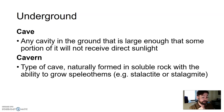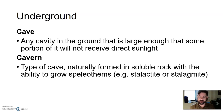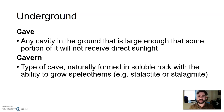A cavern is a type of cave naturally formed in soluble rock. Soluble rock is rock that is dissolvable. So a cavern is a type of cave formed in soluble rock with the ability to grow speleothems — a fancy term for stalactites or stalagmites. If you've ever done any tours in caves, these are terms you may have heard.